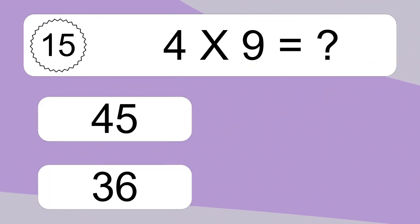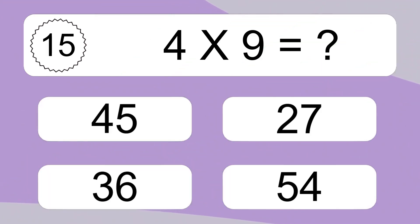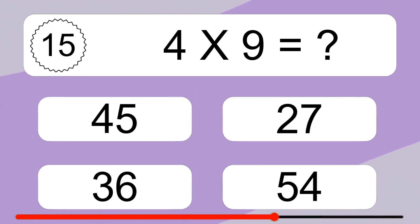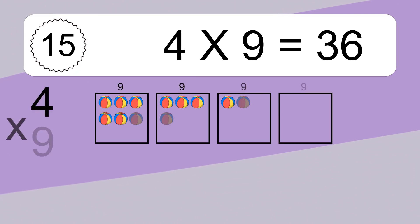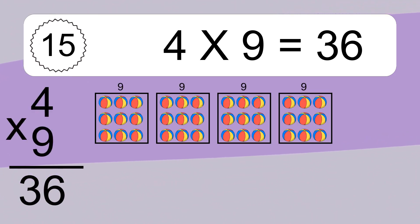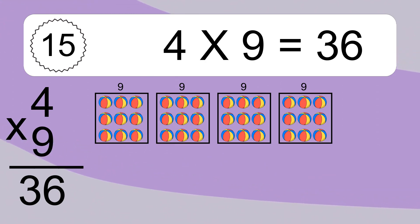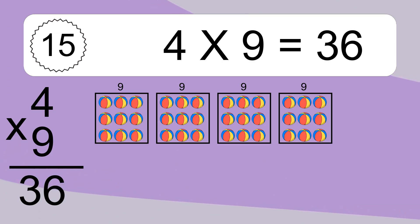4 times 9 equals what? 4 times 9 equals 6. We have 4 boxes, and each box has 9 colorful balls inside. If you count all the balls in all the boxes together, you will have 4 times 9 balls. This equals 36 balls.